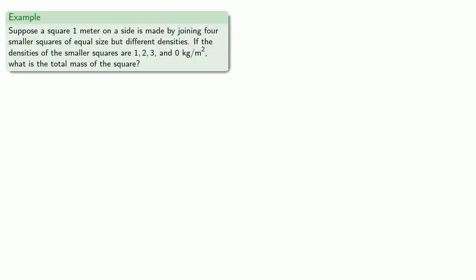For example, suppose a square one meter on a side is made by joining together four smaller squares of equal size but different densities. If the densities of these smaller squares are 1, 2, 3, and 0 kilograms per square meter, what's the total mass of the square?